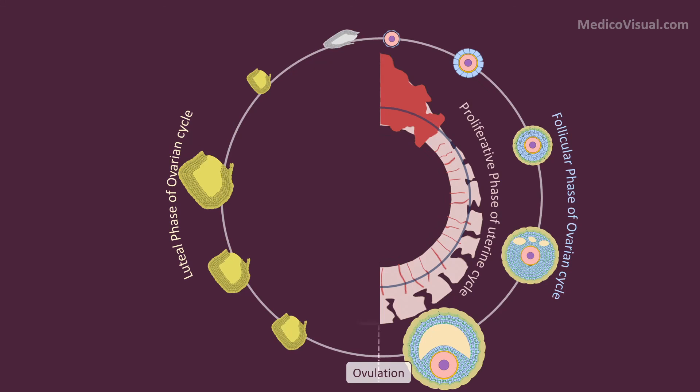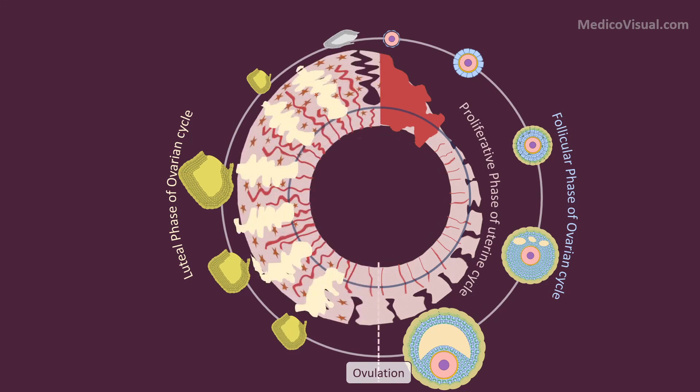The uterus is secreting uterine milk and preparing for the baby—that is the secretory phase of the uterine cycle. If pregnancy doesn't occur, corpus albicans will form, then bleeding will occur, and the cycle will continue.